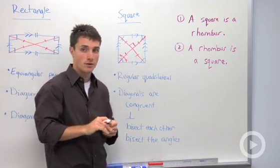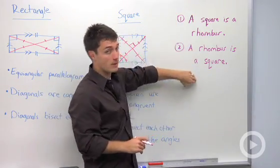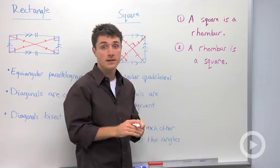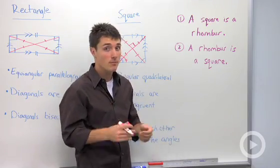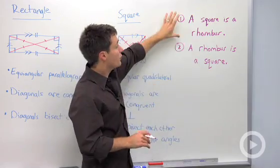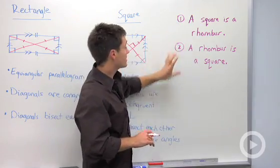Now the last key thing I want to touch on are these two statements: a square is a rhombus, and a rhombus is a square. That's basically the only thing parents remember of geometry—being confused by these two statements. Well, the first statement is true, the second statement is not.